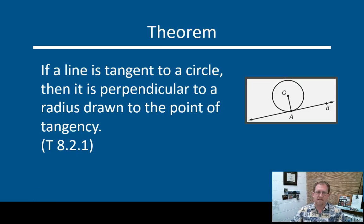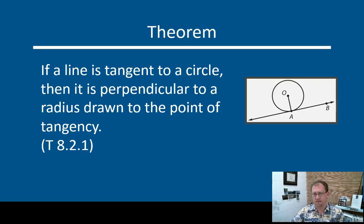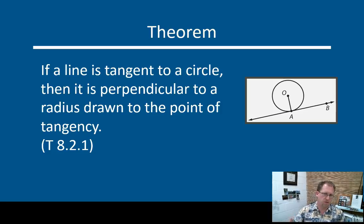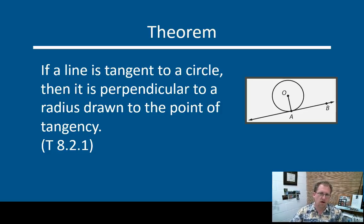Because this line only intersects the circle at one point, it has to intersect the circle at a 90-degree angle to the radius. If it were in any way skewed from a right angle to the radius of the circle, it would touch the circle at more than one place and would not be a tangent. So it has to be perpendicular to a radius drawn from the point of tangency to the center of the circle.